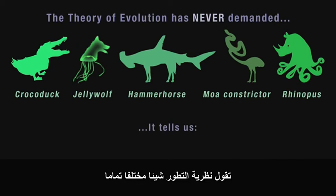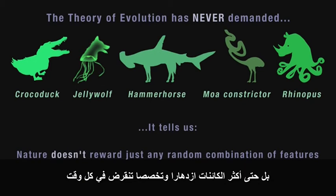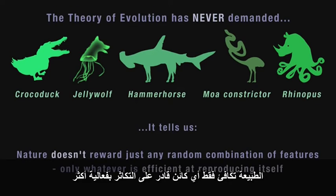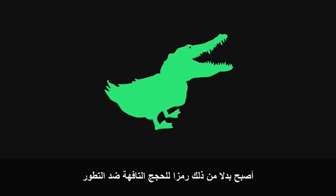The theory of evolution tells us something very different. Nature doesn't reward just any random combination of features. Even highly specialised animals are being driven to extinction all the time. Nature rewards only whatever is efficient at reproducing itself. The Crocoduck, invented to ridicule evolution, has instead become the symbol of bad arguments against evolution.